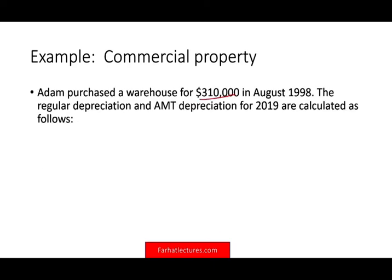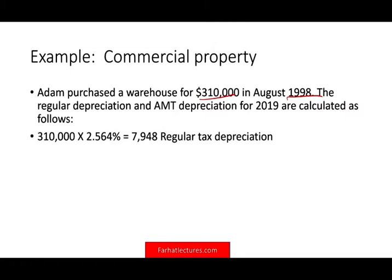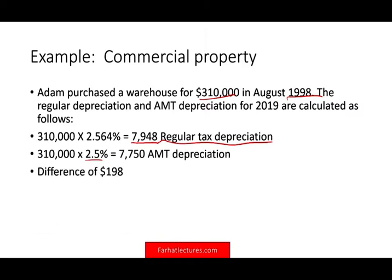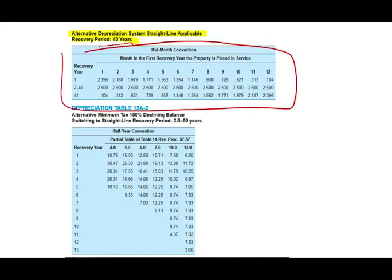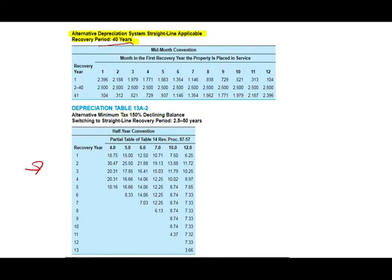Congress effectively said: if the difference is $198 — essentially a 39-year to 40-year property — just don't worry about it; the difference is too small. So there is a different AMT depreciation schedule for real property and for personal property, but for commercial property it doesn't make much of a practical difference.